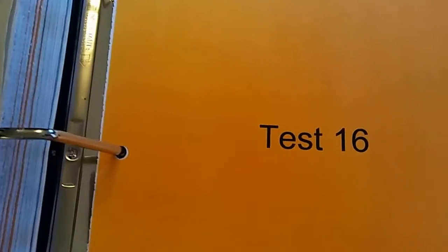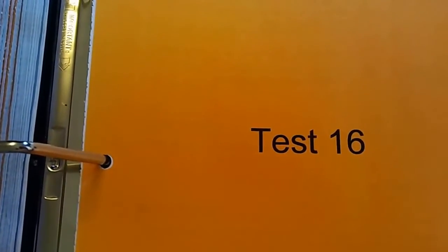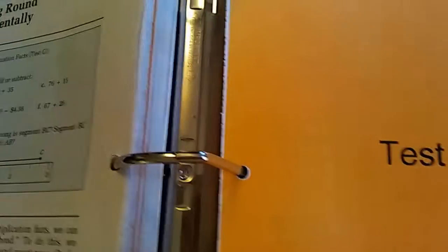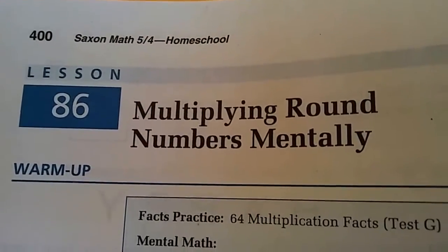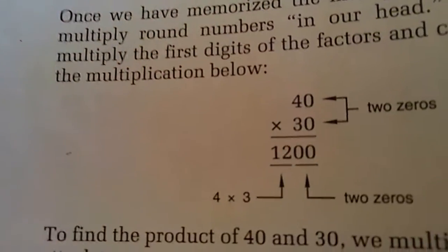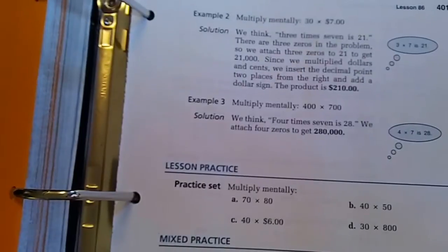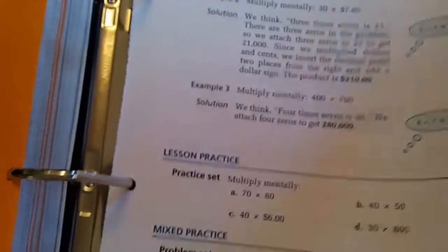In my daughter's math, we had already finished test number 16 and reviewed that the last few days. Her next lesson was multiplying round numbers mentally, which this is an example of, but she already knows how to do that. I looked over the lesson and she already knows how to do all of this.